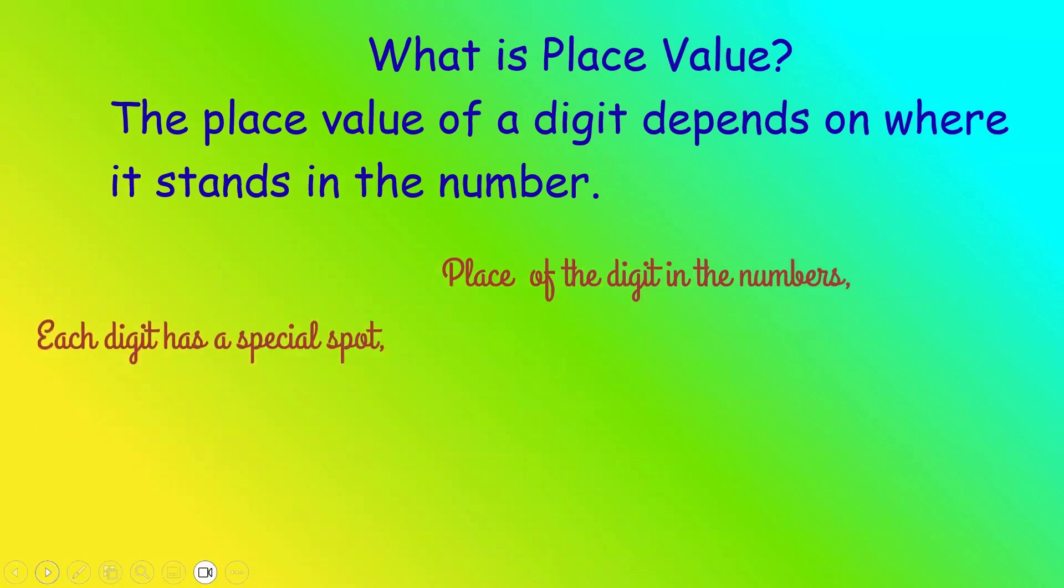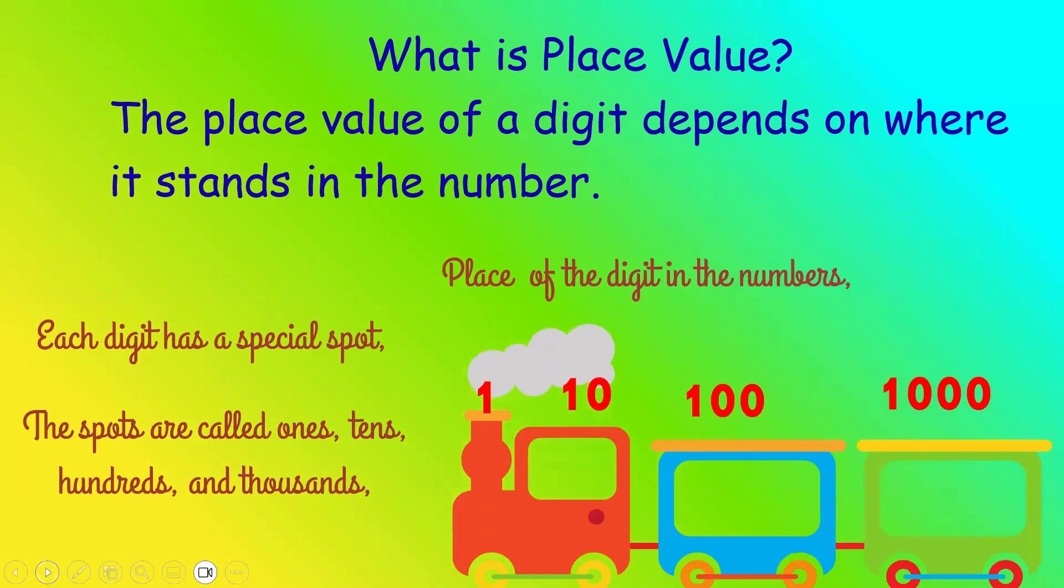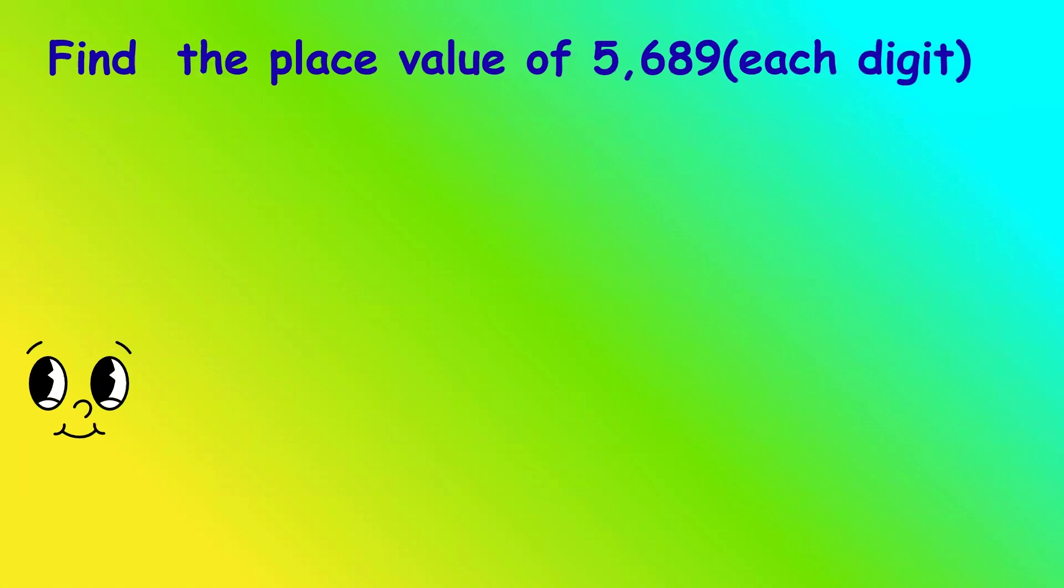The spots are called ones, tens, hundreds, and thousands. Let's see an example. In 5689, each digit has a special spot, like a seat in a number train.